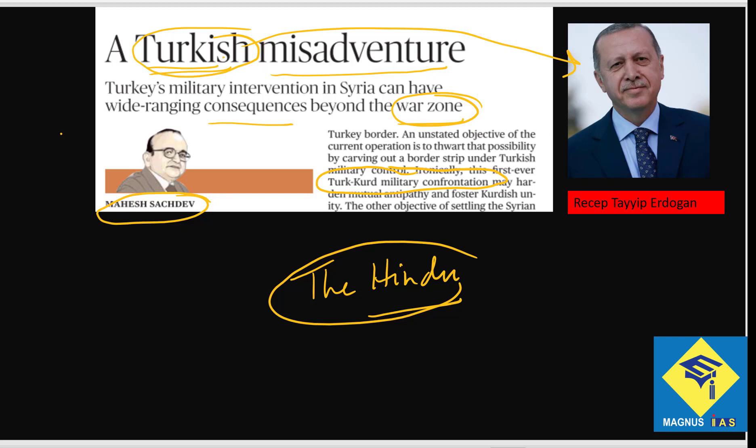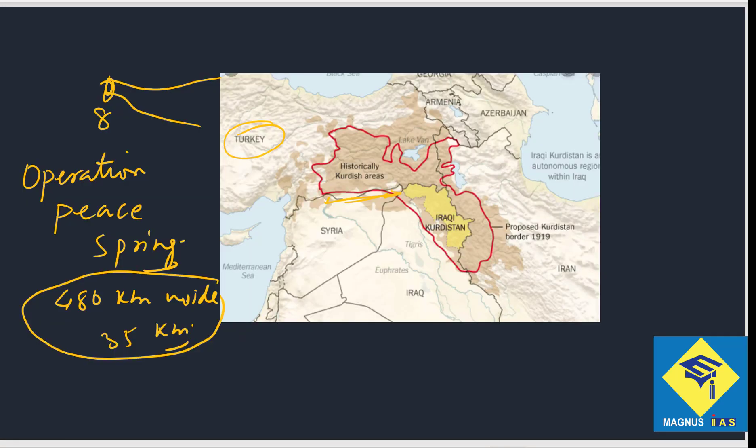At present, Recep Tayyip Erdogan is trying to revive the old Ottoman and Khilafat-style Islamic rule to some extent. About 20 million Kurds — a quarter of Turkey's population — live in the underdeveloped Turkish region, and they are demanding their own Kurdistan.